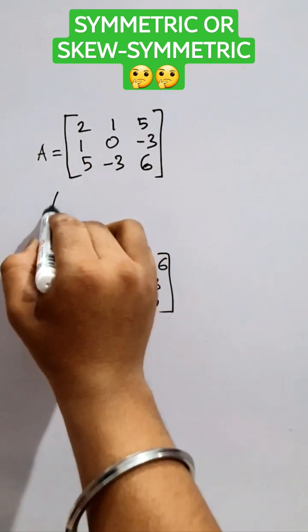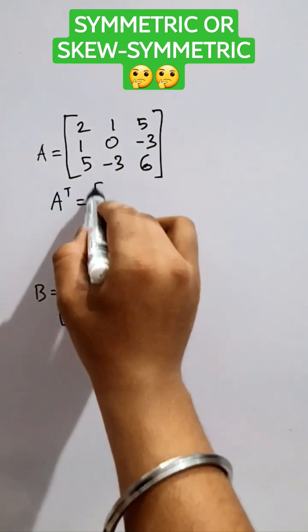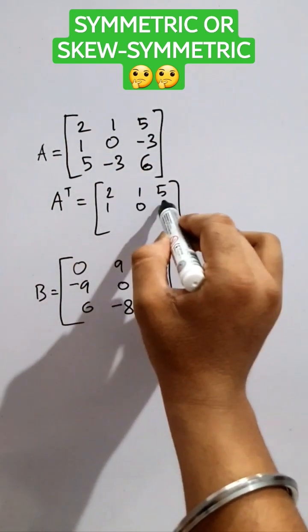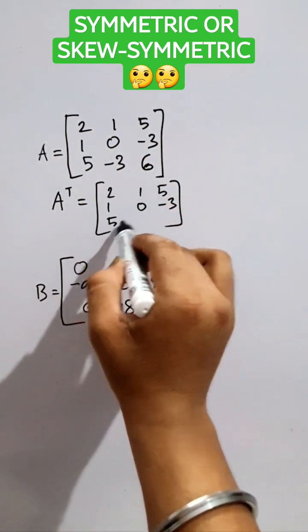Now, let's take the transpose of A matrix. It will be 2, 1, 5. Make the columns as rows. It is the way to find transpose of A matrix.